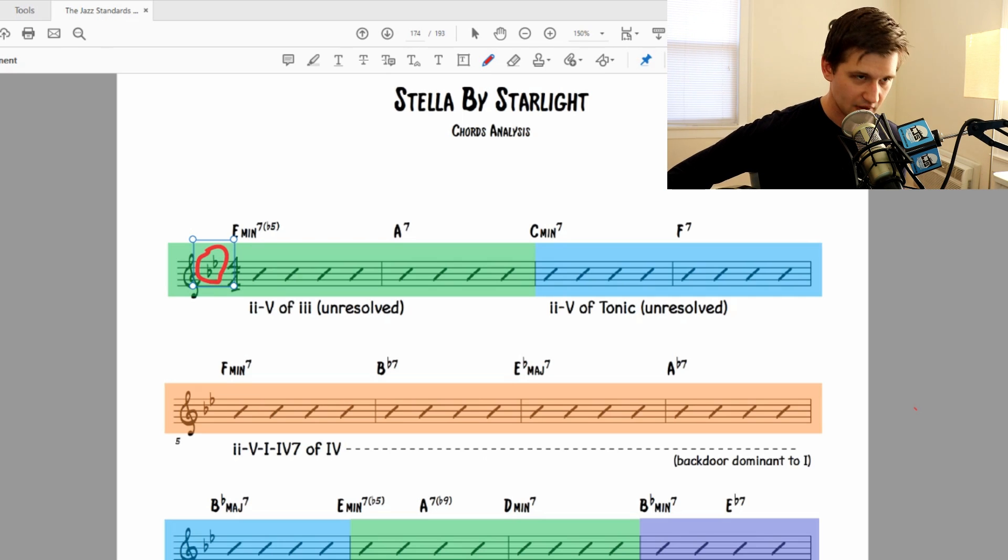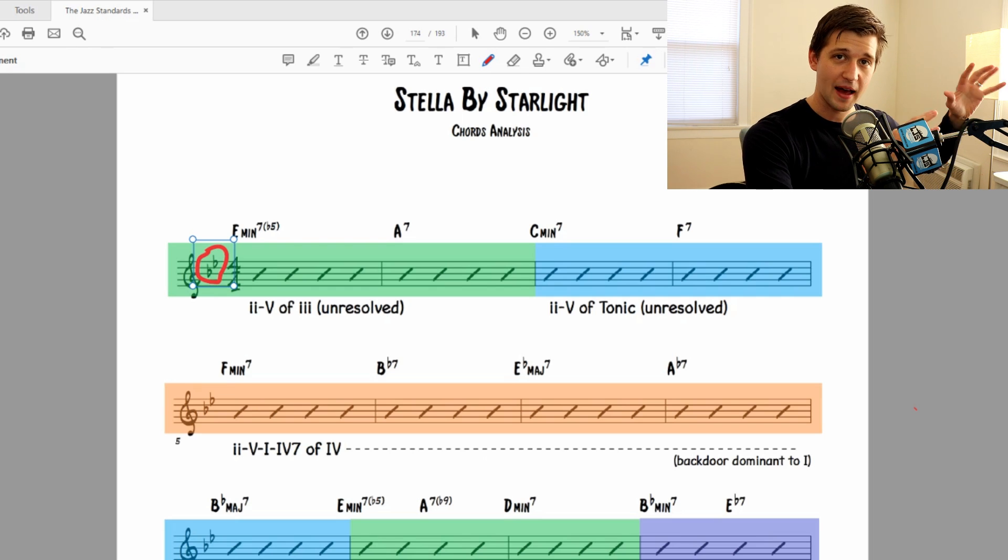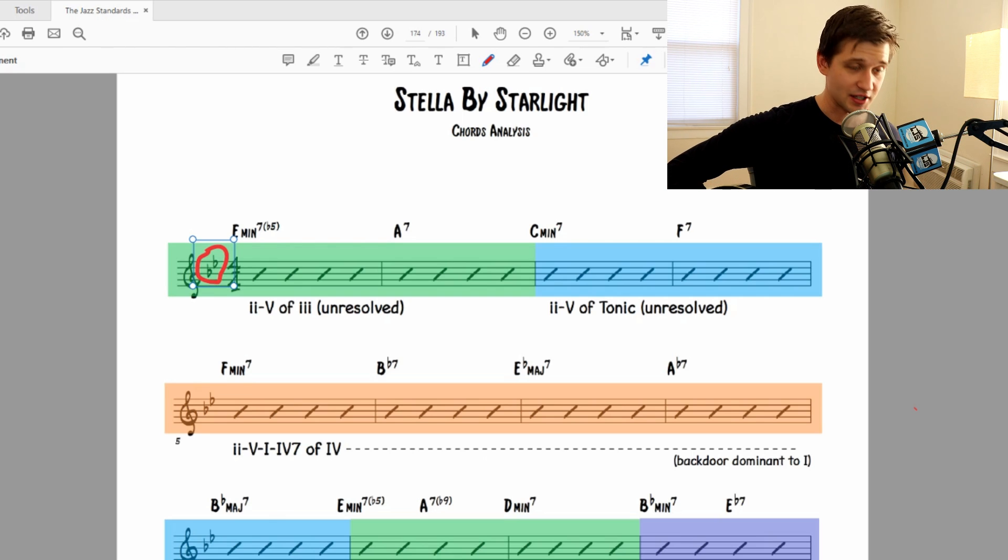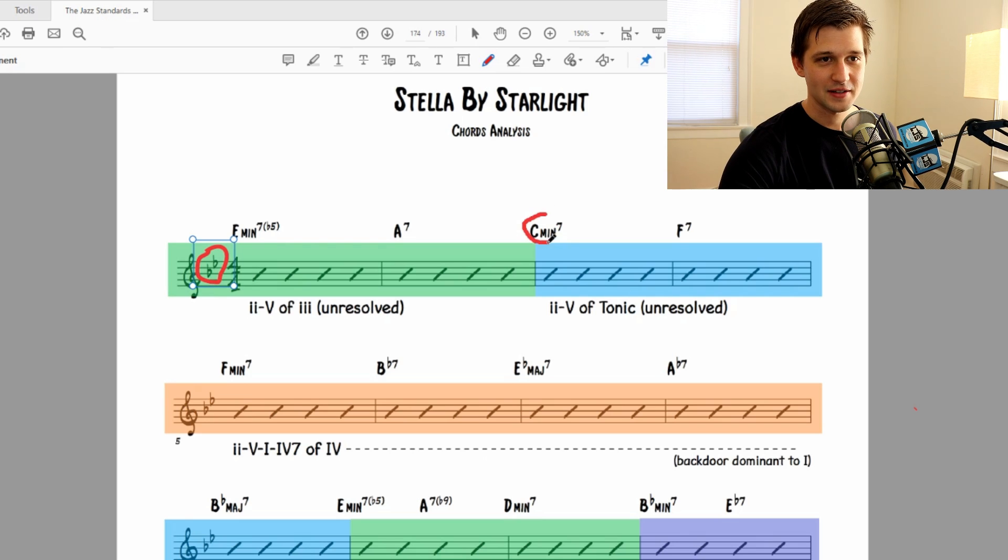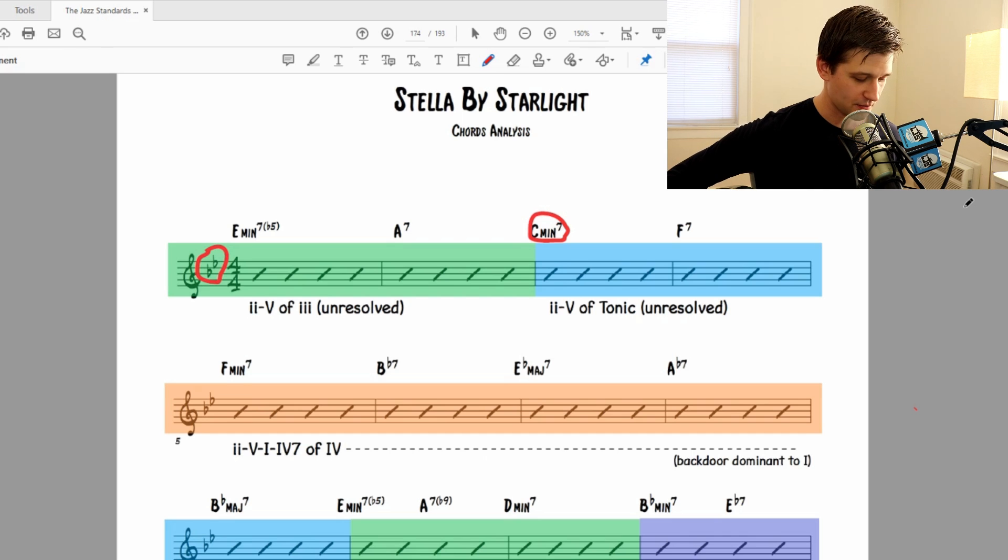So that's the color coding for you. I'm going to keep going through this to remind you what those colors mean. But let's start with these first four bars. So we start with E minor 7 flat 5, A7, C minor 7, F7. So we start with this E minor 7 flat 5 to A7, and I've color coded it green because that's concert D minor. And I have below it says 2-5 of 3. Now, what's the 3? The 3, I'm talking about the parent key center B flat major. So the 3 chord of B flat major is D minor. Hence, a 2-5 of the 3. However, it's unresolved because we're not actually resolving to the D minor 7.